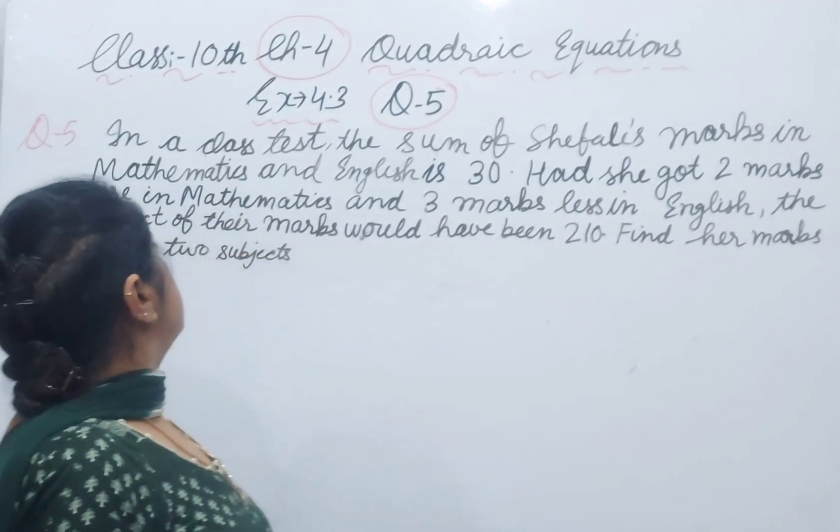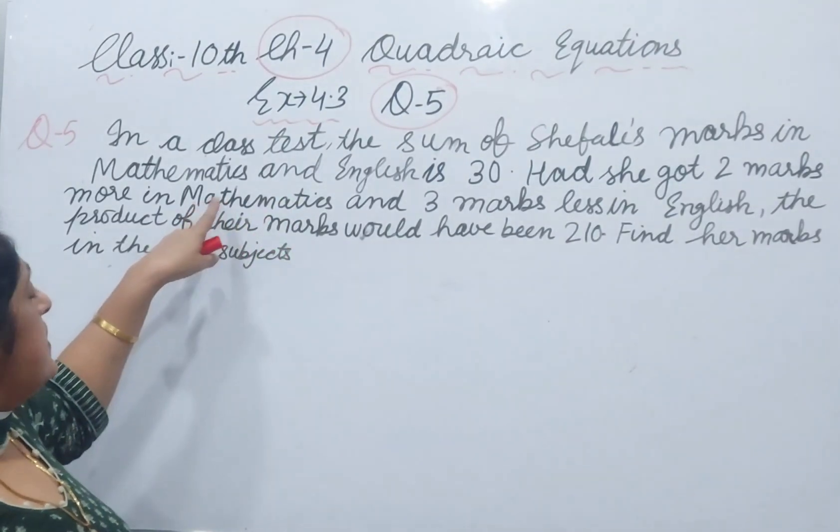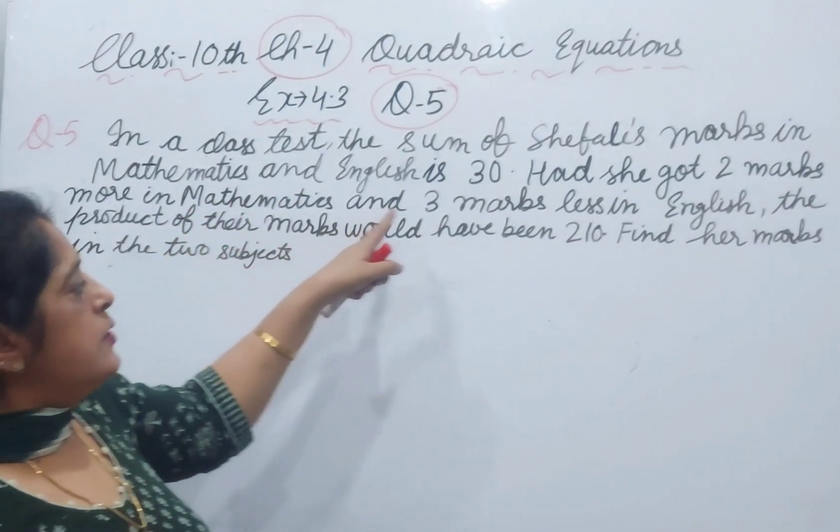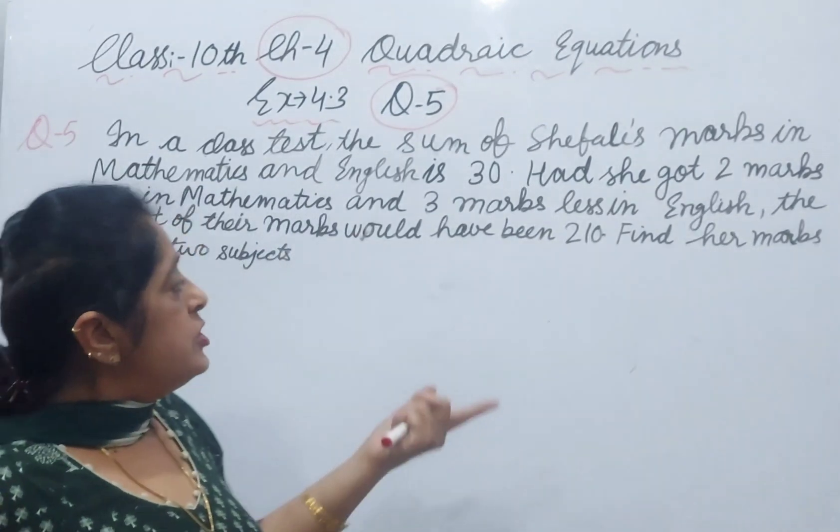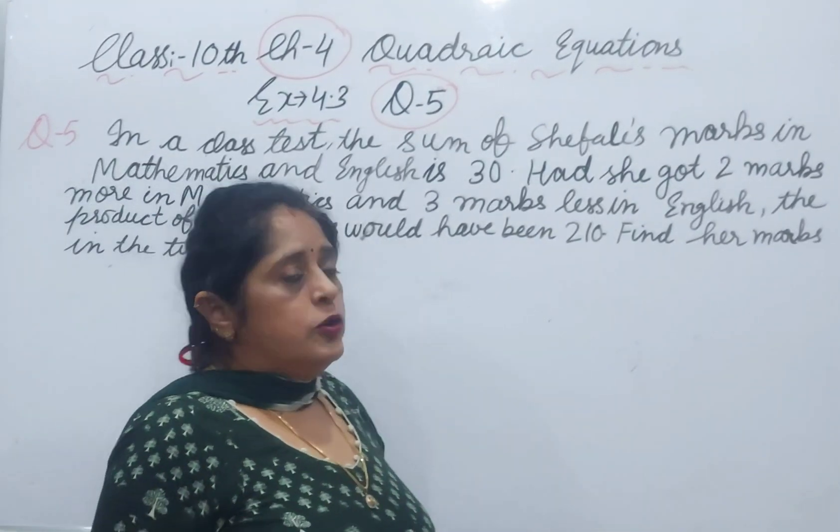Had she got two marks more in mathematics and three marks less in English, the product of the marks would be 210.